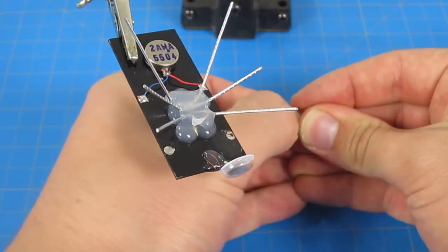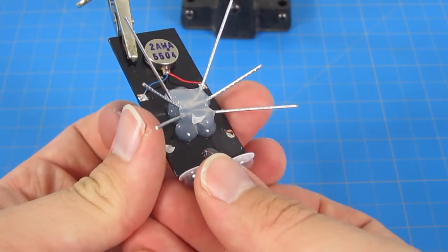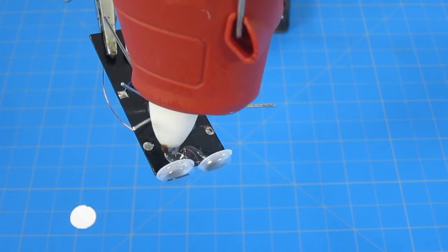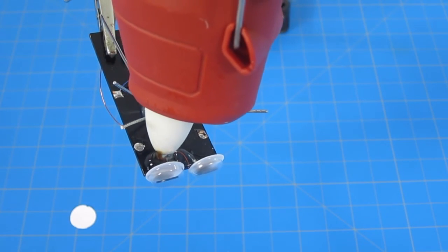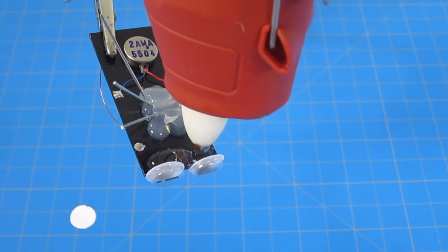Now it's time to place our googly eyes. Take the backing off and press the googly eye against the front of your solar panel next to the antenna. This isn't a lot of surface area, so use some hot glue to make sure the eye stays in place.